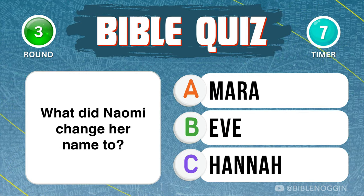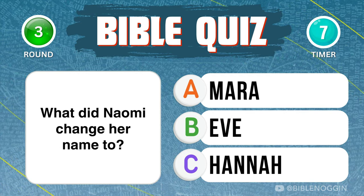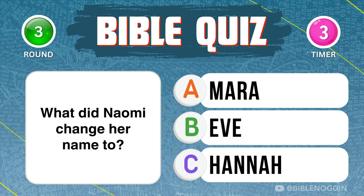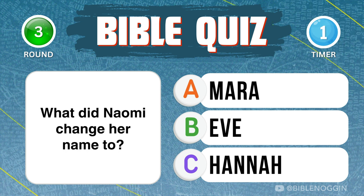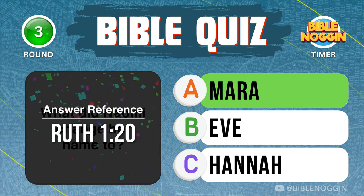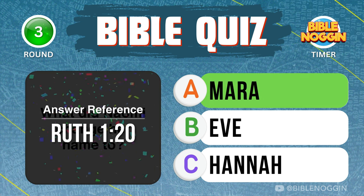Question 3: What did Naomi change her name to? Mara — found in Ruth chapter 1, verse 20.